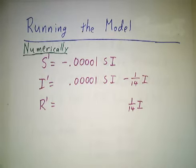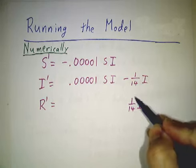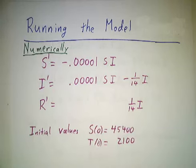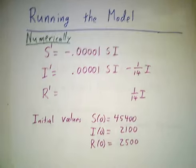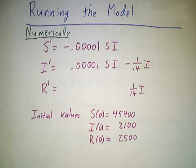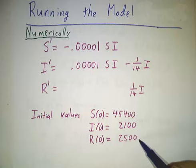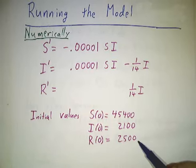So now, let's take a particular instance where this constant is 1/14th and this constant is 0.00001, and where you originally have 45,400 susceptible kids, 2,100 infected kids, 2,500 recovered kids, out of a total population of 50,000 kids.